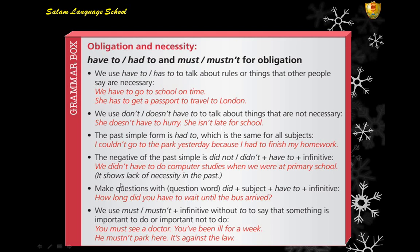To make questions with a question word: for example, 'How long did you have to wait until the bus arrived?' Now, 'must' or 'mustn't' plus the infinitive without 'to' — we use it to say something is important to do or not to do. For example: 'You must see a doctor, you have been ill for a week' — this is strong advice. 'He mustn't park here' — this is a law or rule.